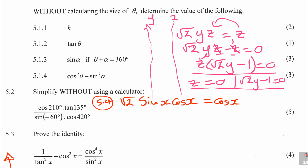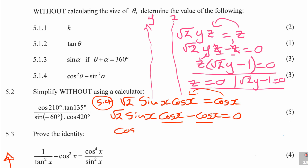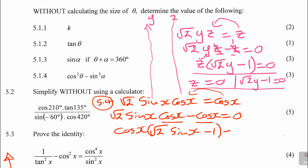So what am I saying? Take cos x to the other side so that you've got square root of 2 sine x cos x minus cos x equals 0. Cos is common — take it out: cos x. When you're factorizing, it means you're dividing — canceling that and canceling that — so that you're left with 1 each time. So it will be root 2 sine x minus 1. Close that bracket — it's equal to 0.